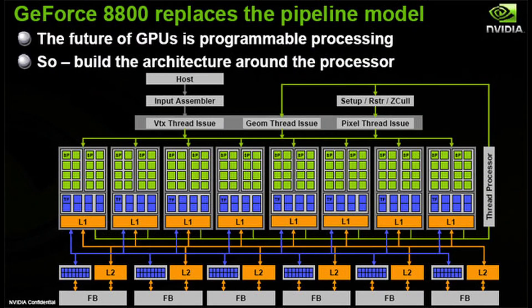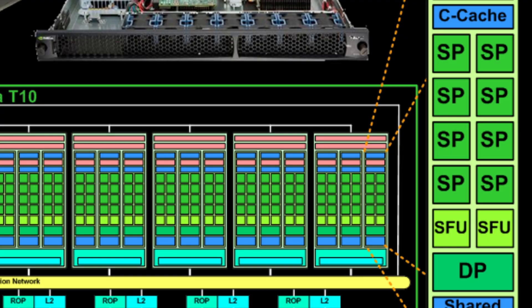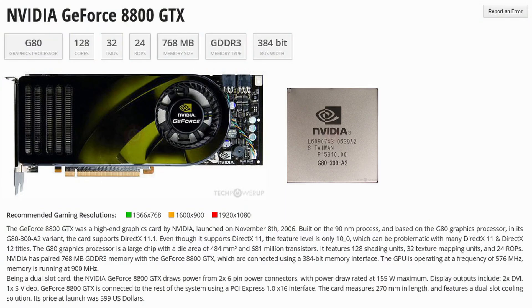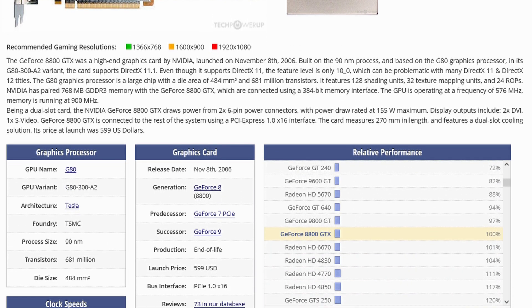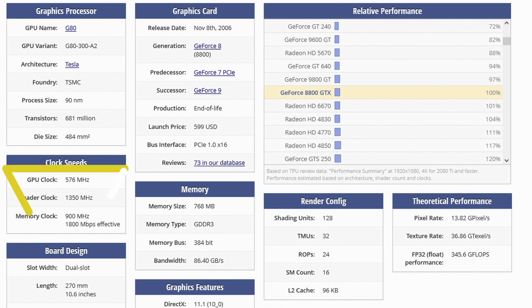The Tesla architecture was NVIDIA's first microarchitecture to implement unified shaders and came to market in the form of the GeForce 8 series, with the GeForce 8800 GTX as its flagship product. Tesla's unified shader architecture consists of many stream processors. Unlike the vector processing approach taken in the past, each stream processor is scalar and thus can operate only one component at a time. The lower maximum throughput of these scalar processors is compensated for by efficiency and their ability to run at higher clock speeds. GeForce 8 runs the various parts of its core at different clock domains — the stream processors of the GeForce 8800 GTX operate at a 1.35GHz clock rate, while the rest of the chip runs at 575MHz.